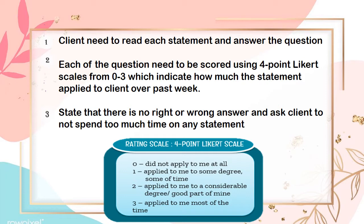The indication of the scores is as follows: 0 means the statement did not apply to me at all; 1 means it applied to me to some degree or some of the time; 2 means it applied to me to a considerable degree or a good part of the time; and 3 means it applied to me most of the time.